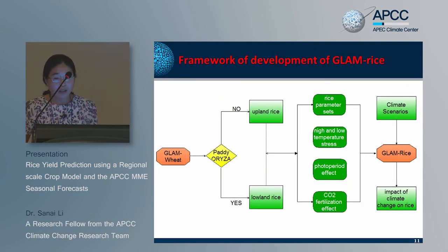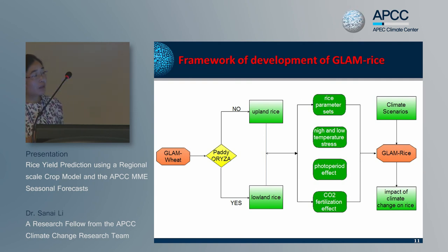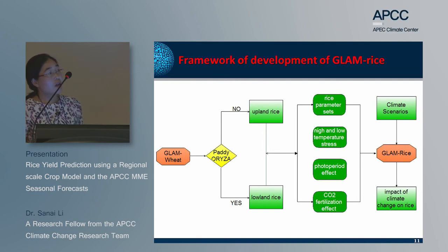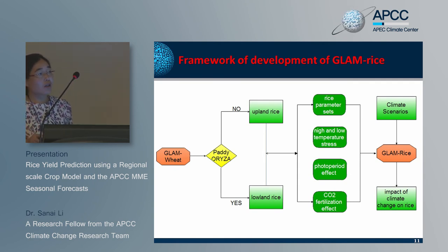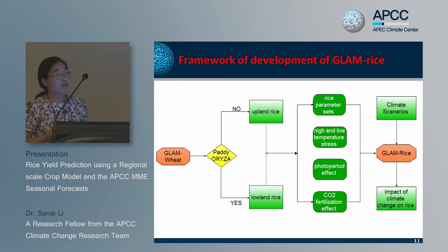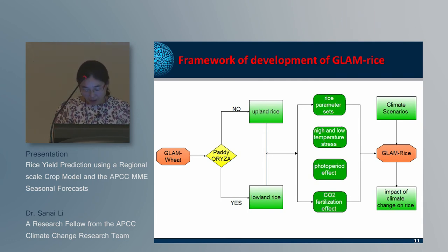Based on the existing GLAM wheat model, the GLAM Rice model was developed. The development of GLAM Rice includes incorporating the water balance for paddy fields from existing models, then defining rice parameter sets, quantifying low-temperature stress, photoperiod effect, and CO2 fertilization effect. Originally, the GLAM Rice model was developed to assess the impact of climate change on rice for South Korea.